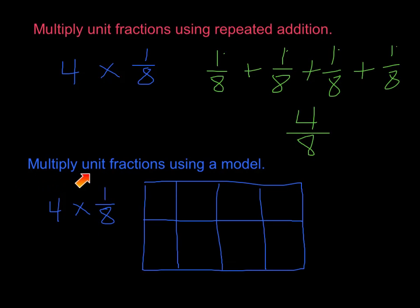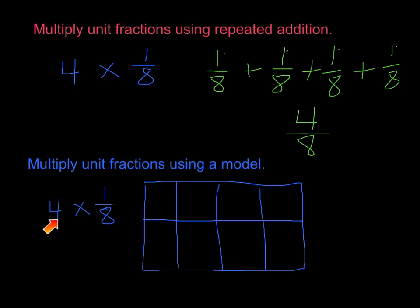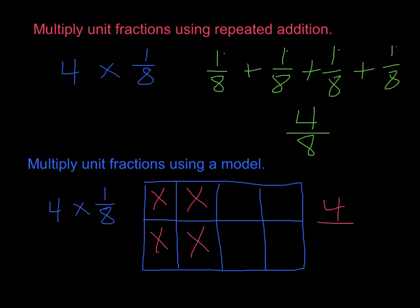Down below we're going to multiply the unit fractions using a model. So 4 times 1 eighth. We have a rectangle divided into 8 sections — in a perfect world these would all be equal, but because we're drawing it here they won't be. Because we're going 4 times 1 eighth, we are going to mark 4 of these sections: 1, 2, 3, 4. Then we count them up and we get 4 eighths.